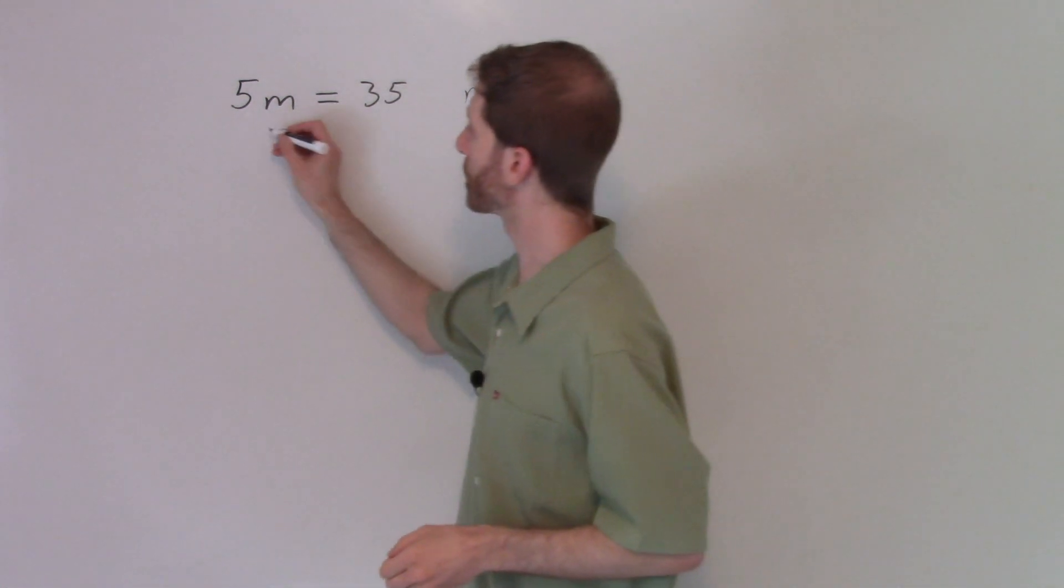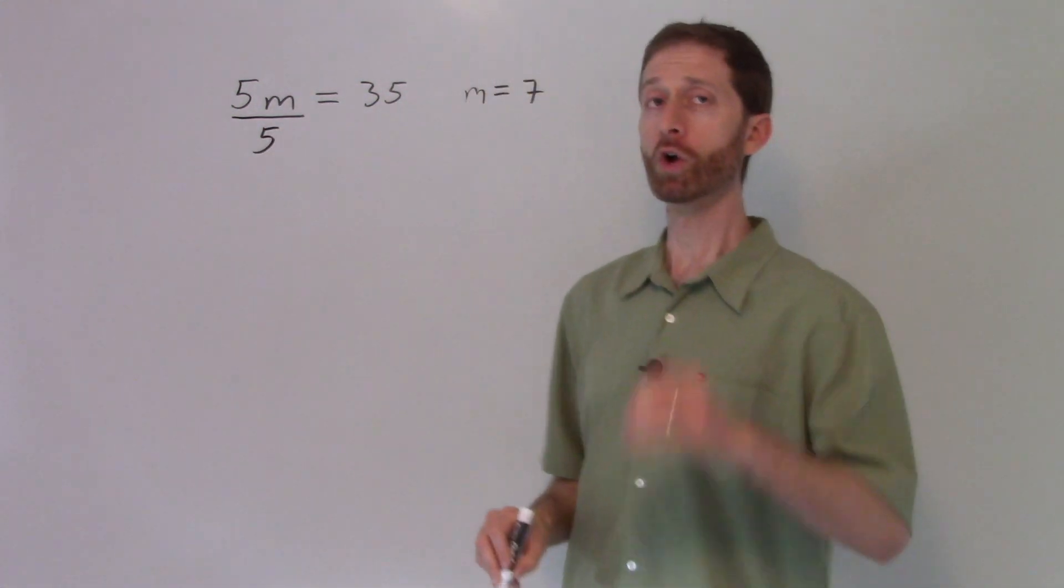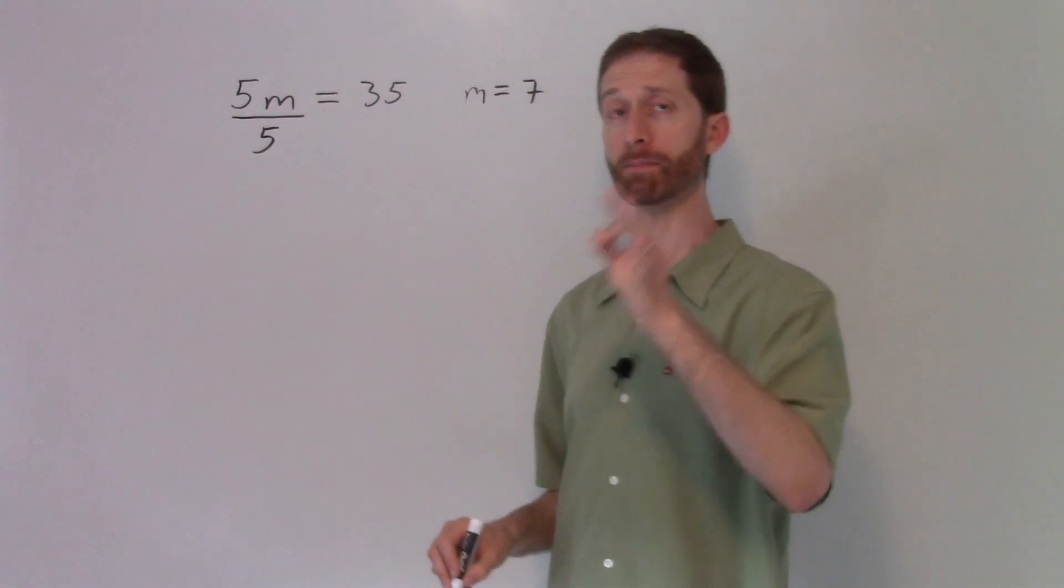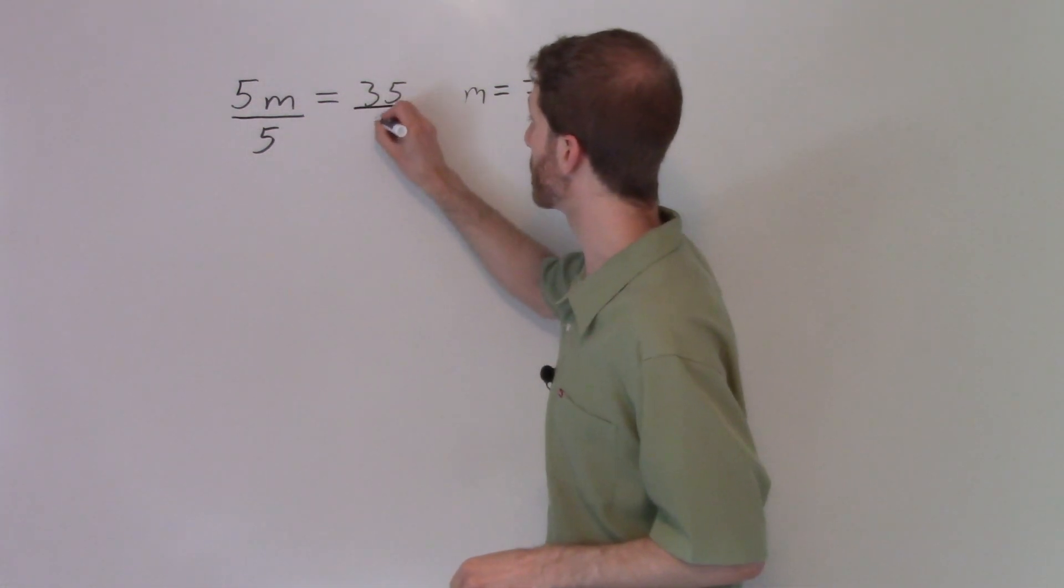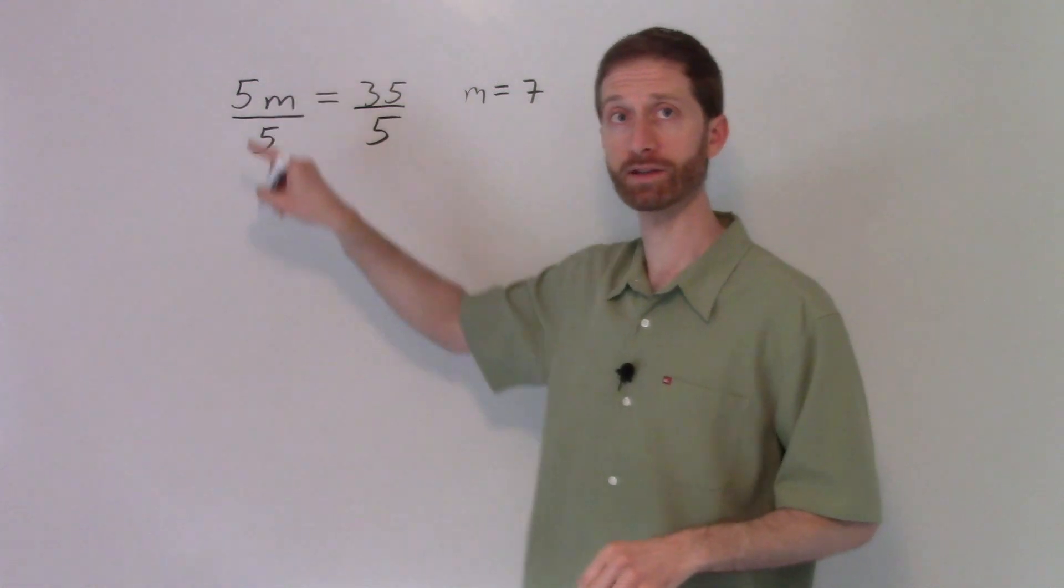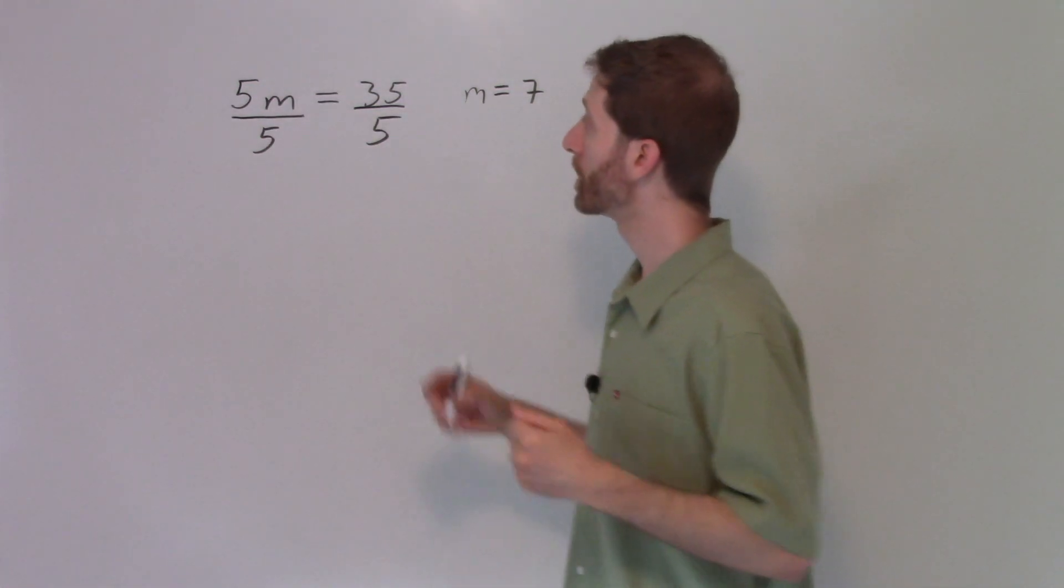So how do we undo multiplication? That would be with division. And I'm going to use the fraction bar notation there. Whatever I do to one side of an equation, I must do to the other to keep the equation true. So I'm automatically going to do this. I don't do any operation on the left hand side until I've done the same operation to the right hand side. Now I'm going to simplify.